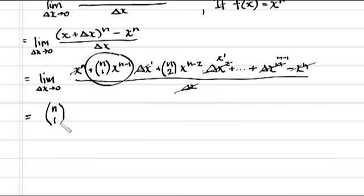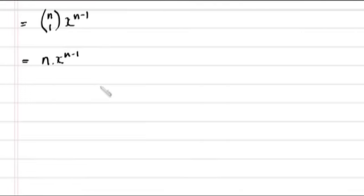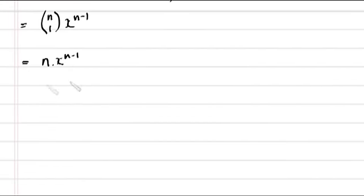So our definition becomes n choose 1 times x to the n minus 1. And n choose 1 is just n. There's only n ways you can choose one object from n objects. And that leaves us then with our definition of d by dx of x to the power n, which is n times x to the n minus 1.